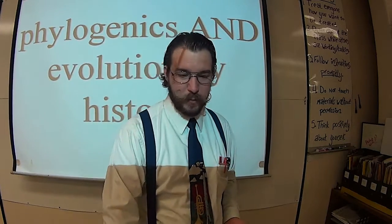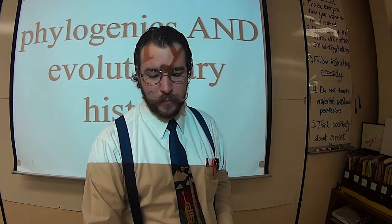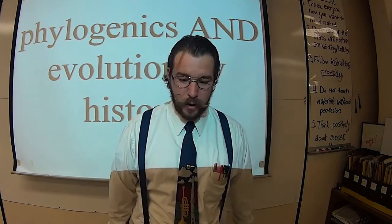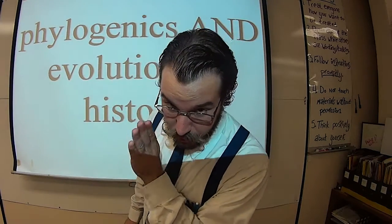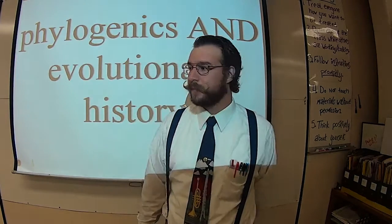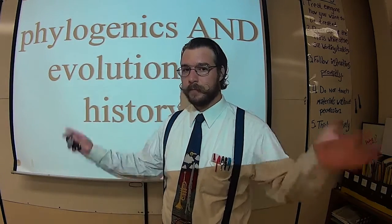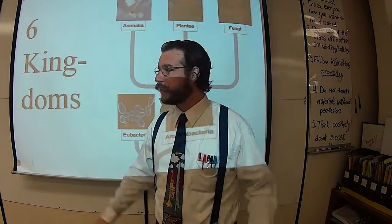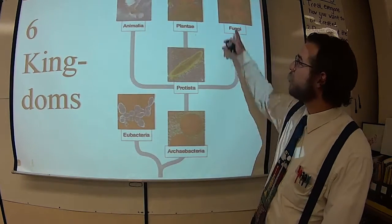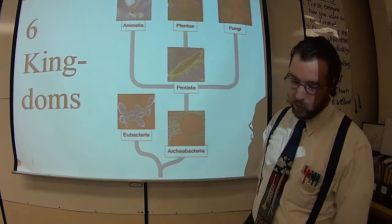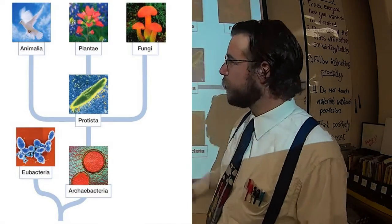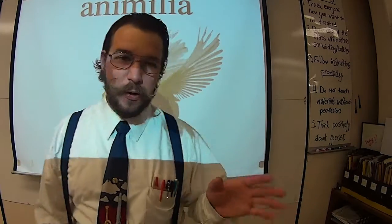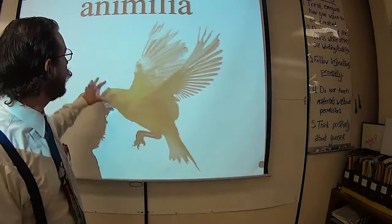Taxonomy is the system of the six kingdoms. There are six kingdoms. Look at this pretty picture that shows you the six different kingdoms. There's kingdom Animalia — look at that, it's a bird. That should be a capital letter because it's a proper noun.